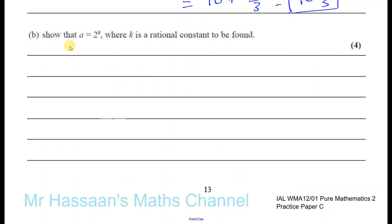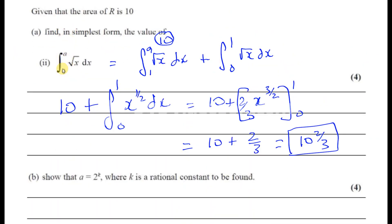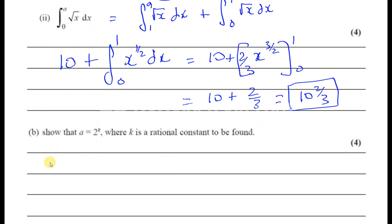Part b: show that A is equal to 2 to the power of k. We've just shown that the integral of the square root of x with respect to x between 0 and A is equal to 10 and 2 thirds, which is 32 over 3. Let's use that to work out what A is going to be.